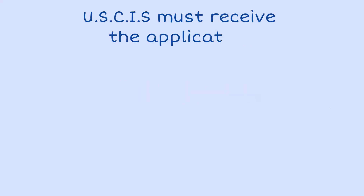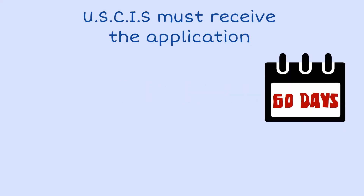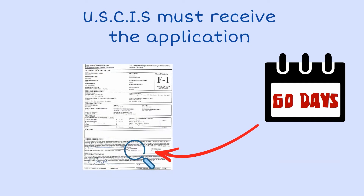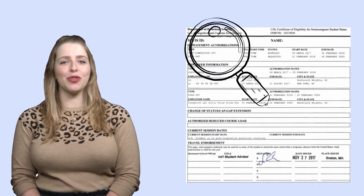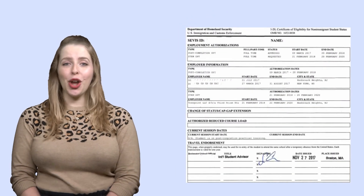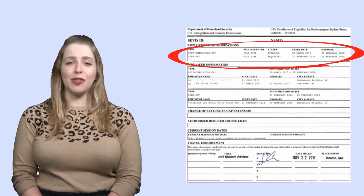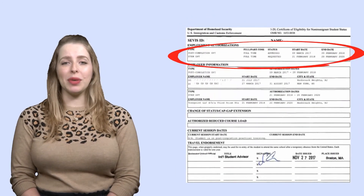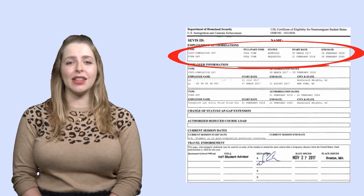Remember, USCIS must also receive the application within 60 days of the date of the recommendation on the I-20. Let's take a look at the second page of your I-20, where we can see if you have a STEM OPT recommendation and the date that it was recommended.